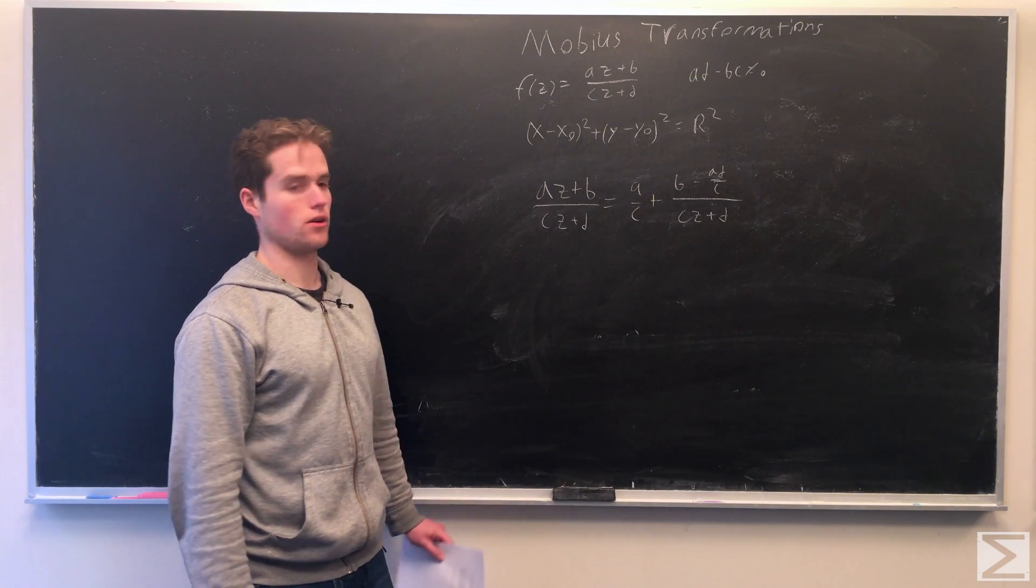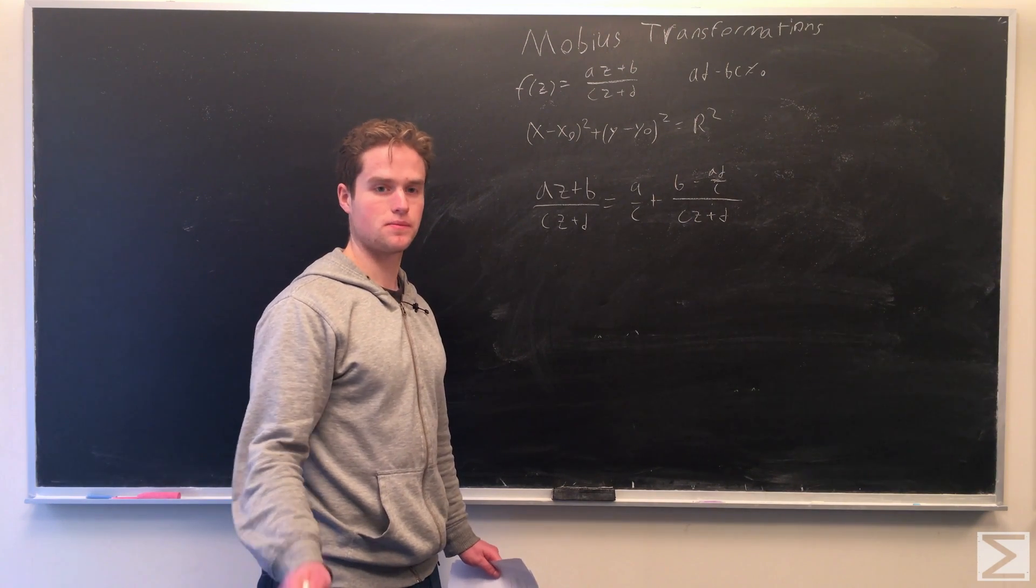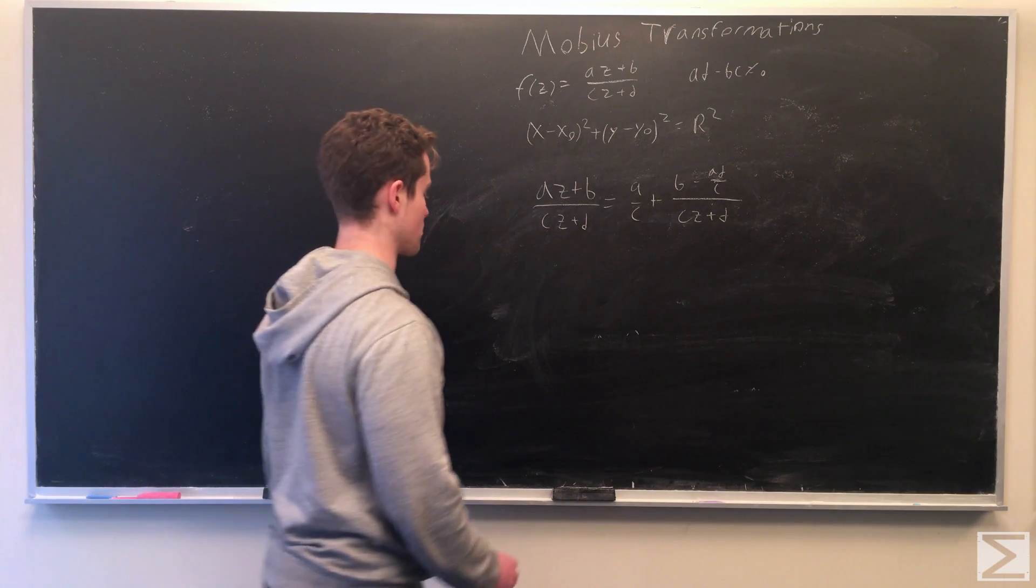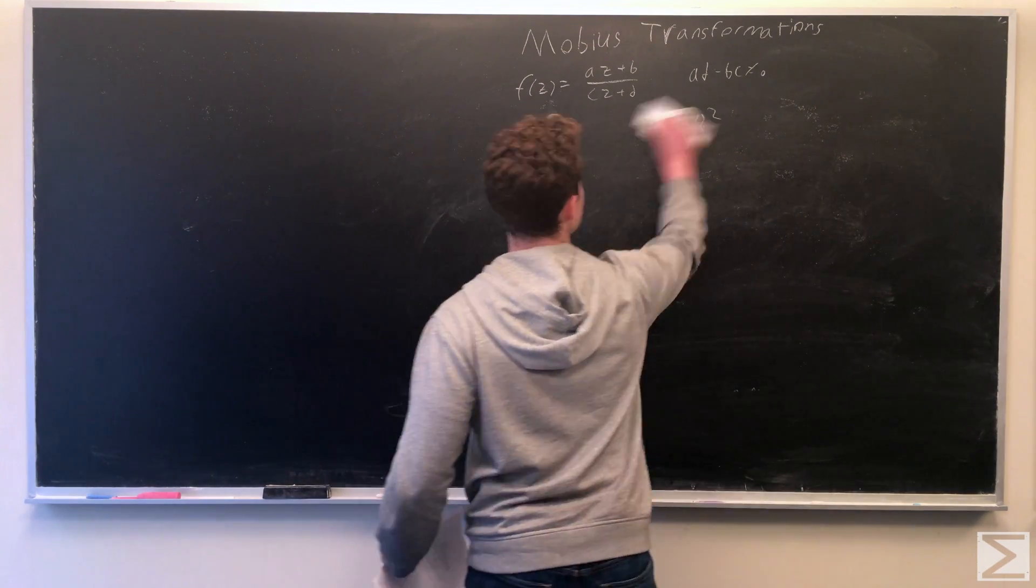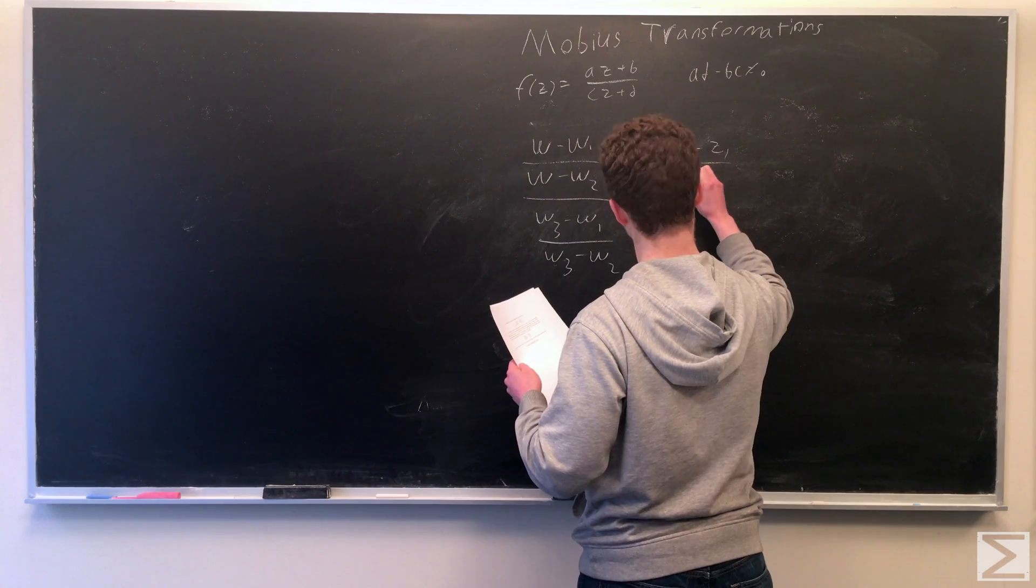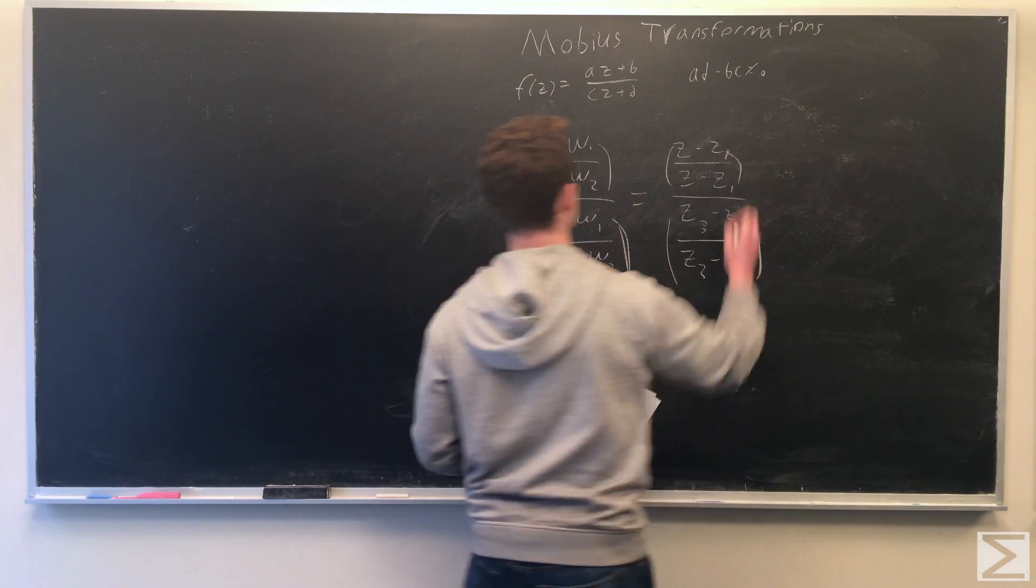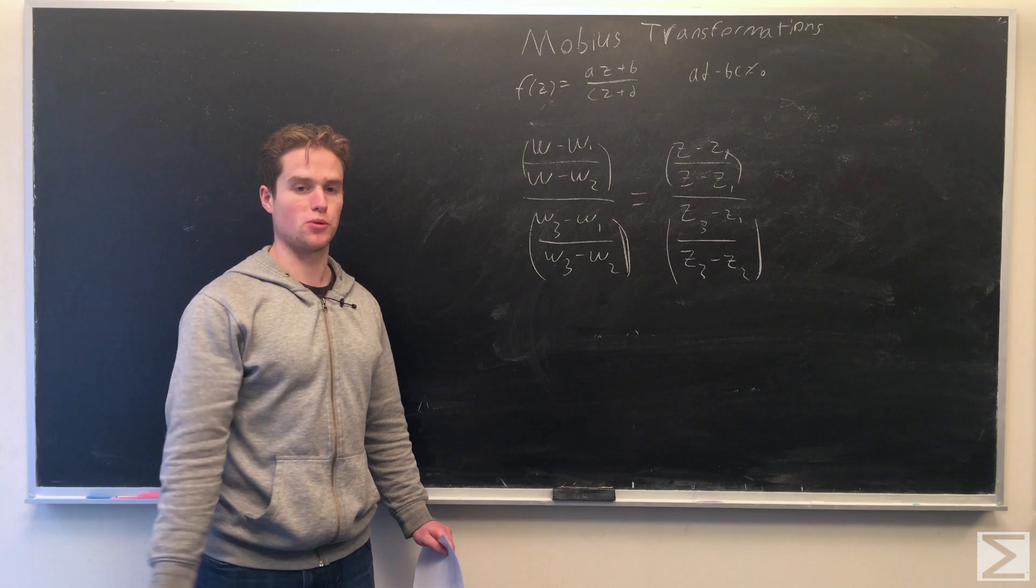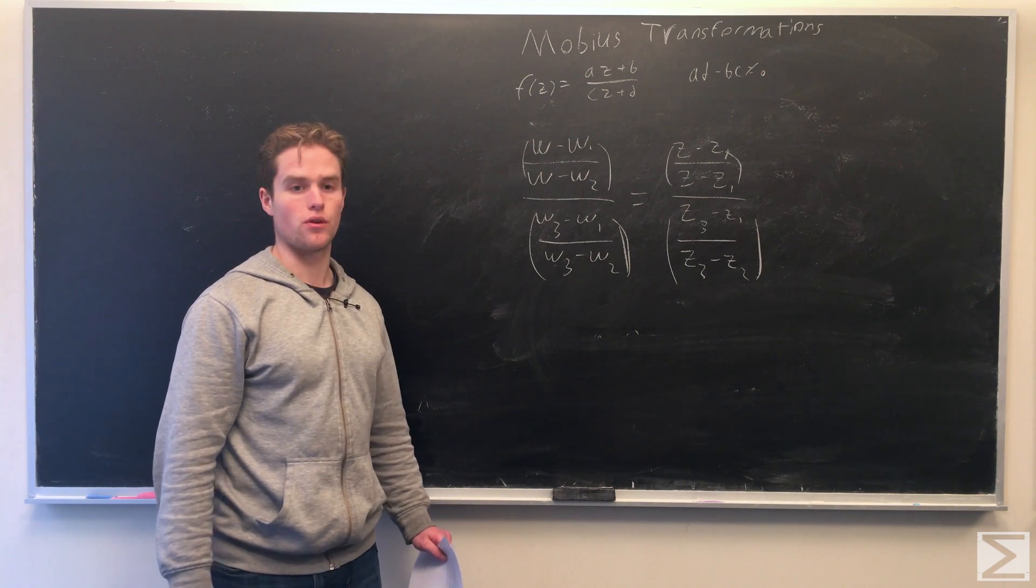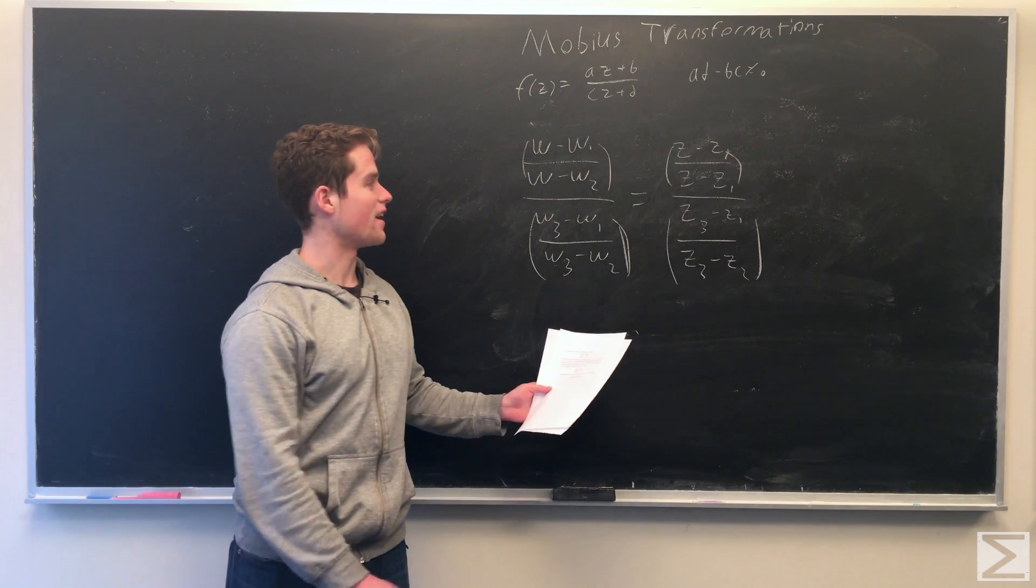One last thing we can note about the Mobius transformation is a neat form given that you have a Mobius transformation that sends three certain points to three certain points in the complex plane. We can write, so this can be a useful form if you're given a Mobius transformation, you know it sends three points to three other points. I'm writing w minus w1 over w minus w2 over w3 minus w1 over w3 minus w2, and a similar form for z.